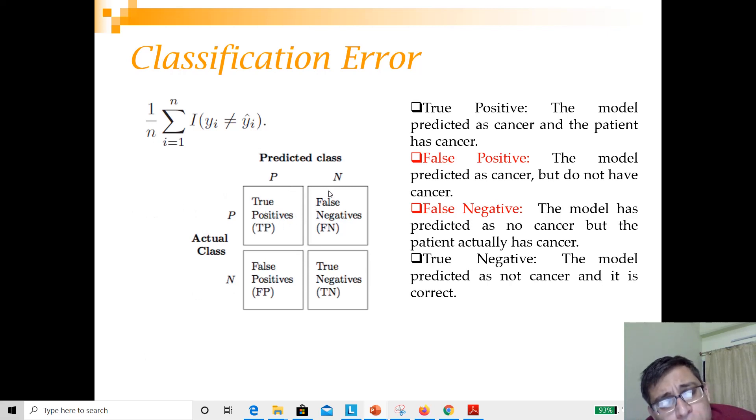When you are predicting as negative and the actual class is positive, you call it false negative. When the actual class is negative and the predicted class is also negative, it's true negative. When you have predicted as positive but the actual class is negative, it's called false positive.